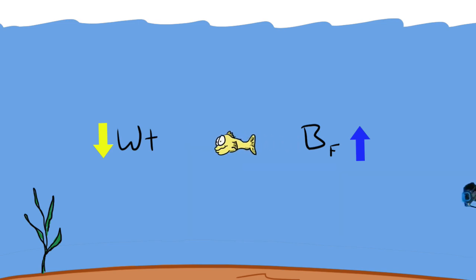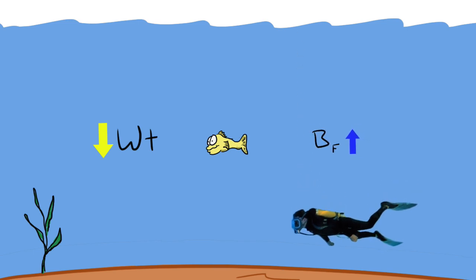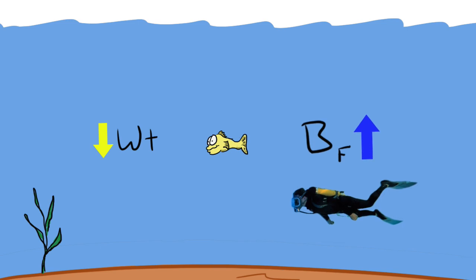Scuba divers know that exhaling their breath causes them to sink. Why? Because doing so decreases the volume of the chest cavity. To rise, the scuba diver takes in a deep breath to expand their volume and thus increase the buoyant force.